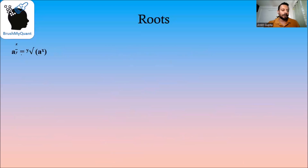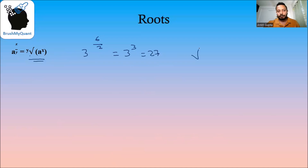a raised to x/y is equal to the yth root of a raised to x. For example, 3^(6/2) = 3³ = 27. On the right-hand side, the yth root (square root) of 3⁶ also becomes 3^(6/2) = 3³ = 27.